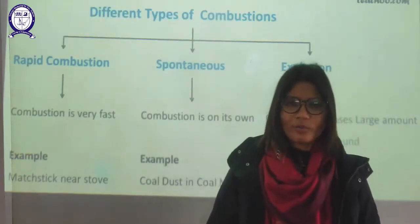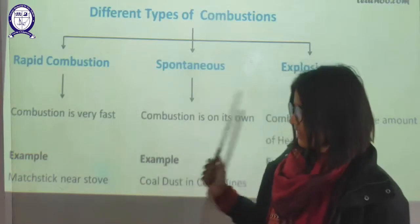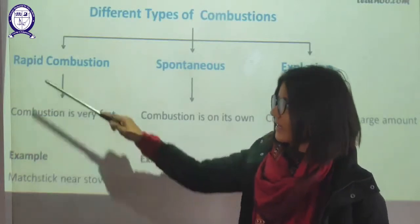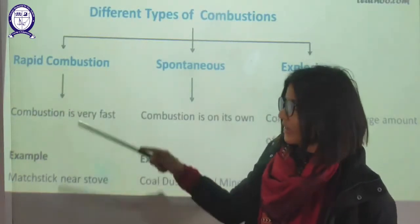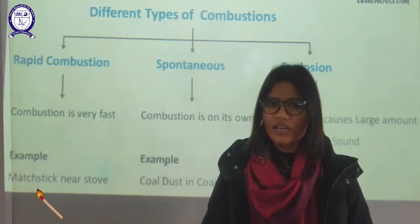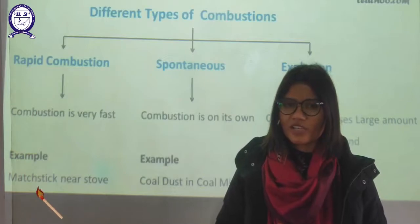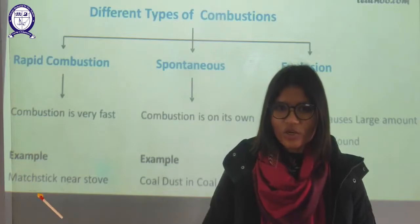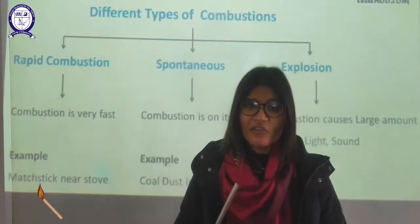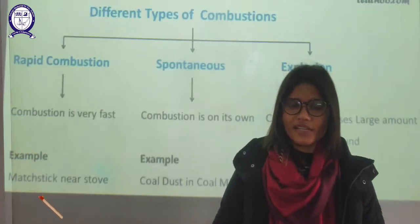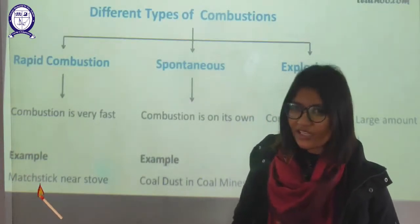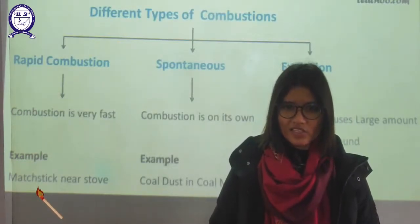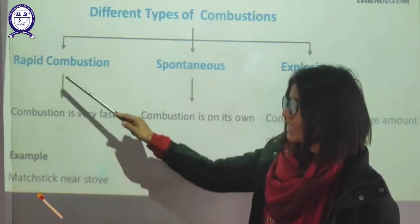Combustion can be divided into many types, but the most broad categories are: first, rapid combustion. As the name suggests, rapid means fast — the combustion which occurs at a very fast rate, or in other words, the combustion which requires less ignition temperature. There is a threshold temperature which must be attained for any combustible substance to start burning, and that temperature is the ignition temperature. The type of combustion in which attaining this ignition temperature requires less time is known as rapid combustion.